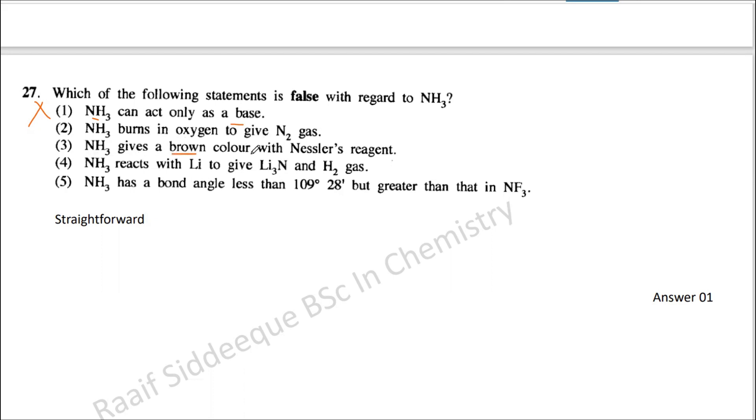NH3 gives a brown color with Nessler's reagent - this is the identification method of ammonia. Ammonia reacts with lithium to give Li3N.